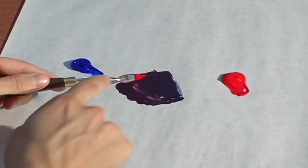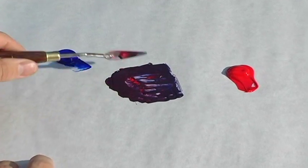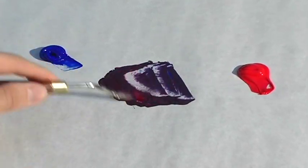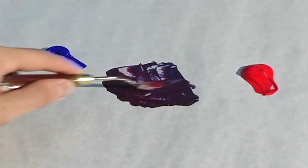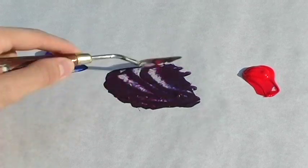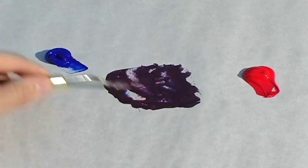You want to make sure and get all the residue off of your palette knife because you have nothing but purple left over. I like to kind of cross hatch a couple of times both ways just to get those last bits of stubborn pigment.